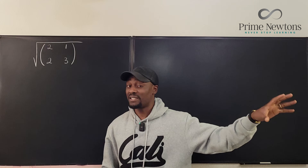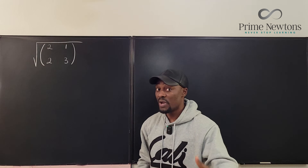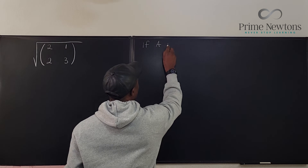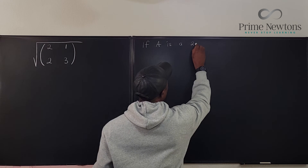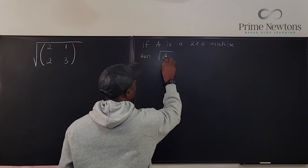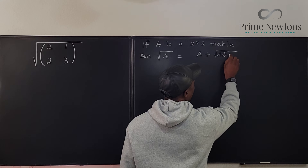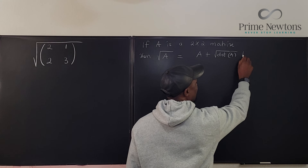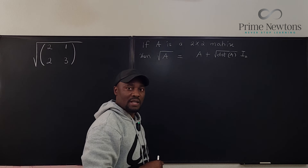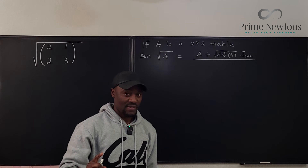For any 2 by 2 square matrix — and some conditions are relevant, which we'll talk about after — here is the formula. If A is a 2 by 2 matrix, then the square root of A equals A plus the square root of the determinant of A, multiplied by the 2 by 2 identity matrix.